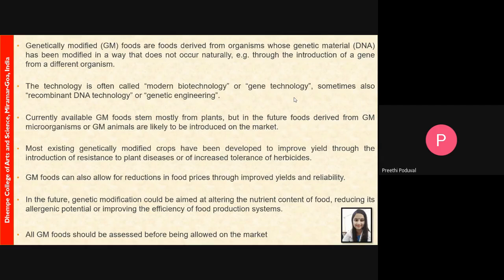Currently available genetically modified foods stem mostly from plants, but in the future, foods derived from GM microbes or GM animals are likely to be introduced into the market. Most existing GM crops have been developed for improvement of yield and for other advantages such as resistance to plant diseases and increased tolerance to herbicides. GM foods can also be used to reduce food prices, as the farmer saves money otherwise invested in herbicides, pesticides, insecticides, and fertilizers.